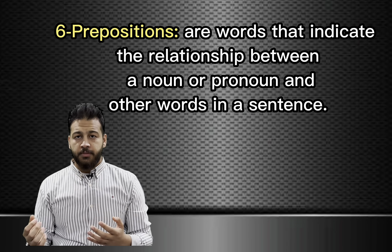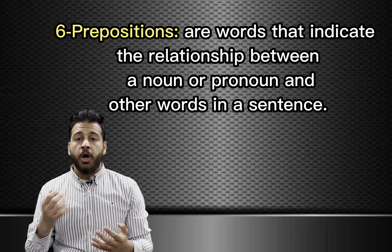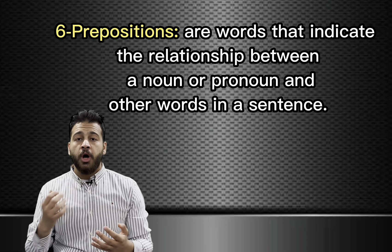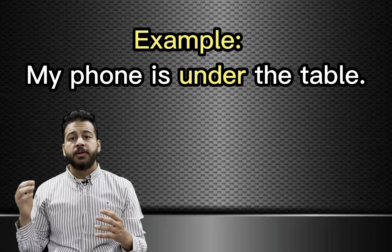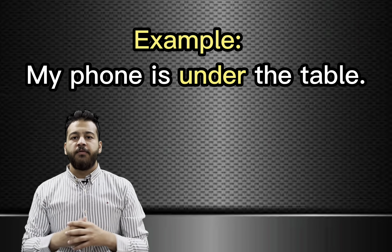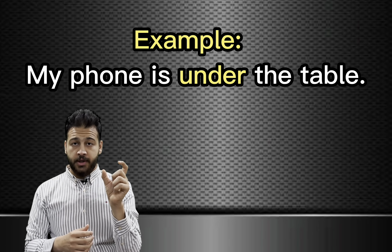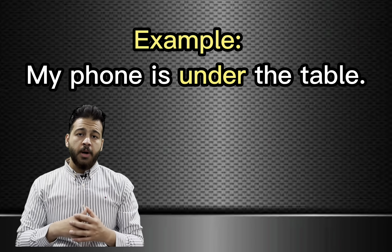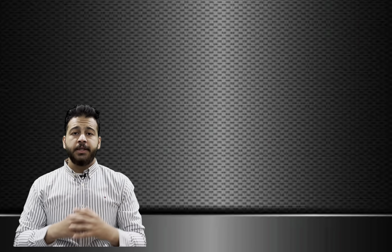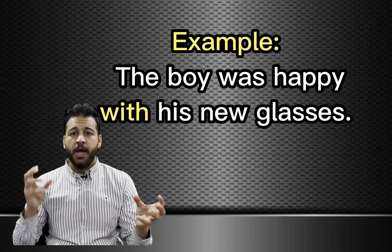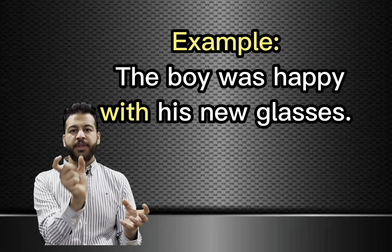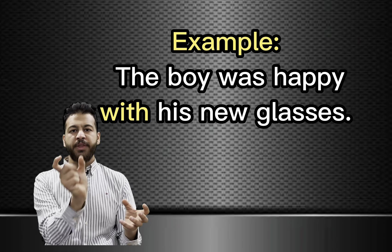Number six: prepositions. Prepositions are words that indicate the relationship between a noun or a pronoun and other words in a sentence. Prepositions also show the time and place of something. Examples: in, on, at, under, with, below, beneath. In the sentence 'my phone is under the table,' the word under shows the place of the phone — so under is a preposition. Another example: 'the boy was happy with his new glasses.' The word with indicates the relationship between the subject and the rest of the sentence, so with is a preposition.